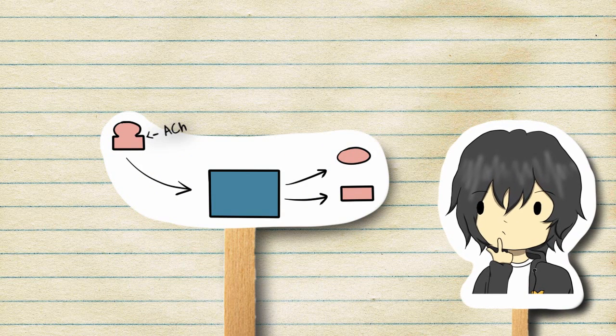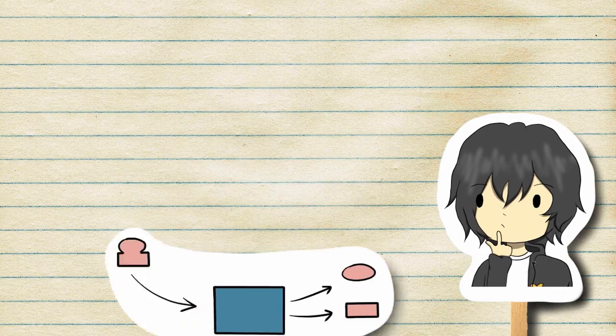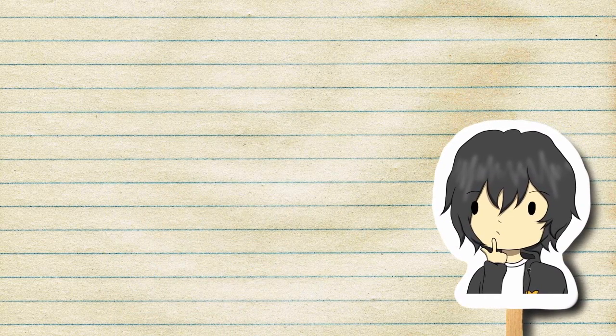The ACH that started the contraction is quickly broken down by the enzyme acetylcholine esterase. This enzyme is found in the synaptic cleft. Muscle fiber is no longer stimulated and relaxation can now occur.